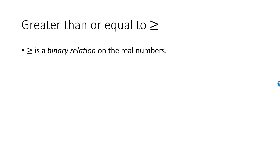Greater than or equal to is such a binary relation, returning for example true if the left hand side number is nine and the right hand side number is four. Greater than, as well as less than and less than or equal to, are also binary relations on the real numbers. They just have different truth tables.